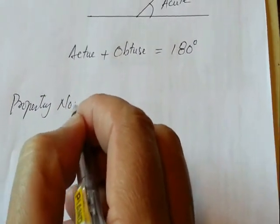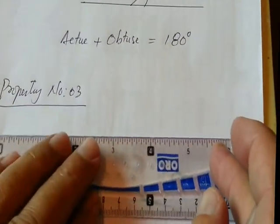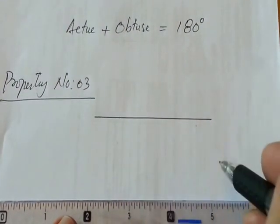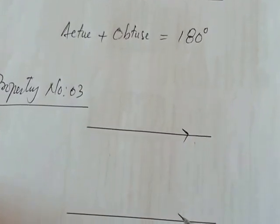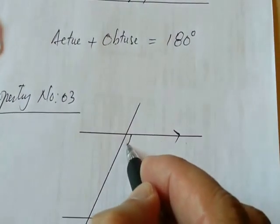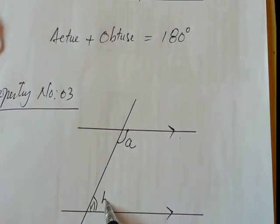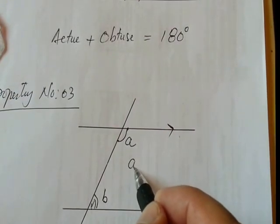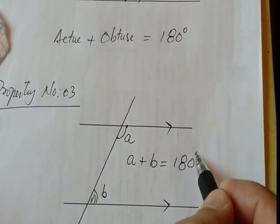Property 3: If two lines are parallel and there is a line cutting through both, the angles formed at point A and at point B are supplementary, so their sum will be 180 degrees.